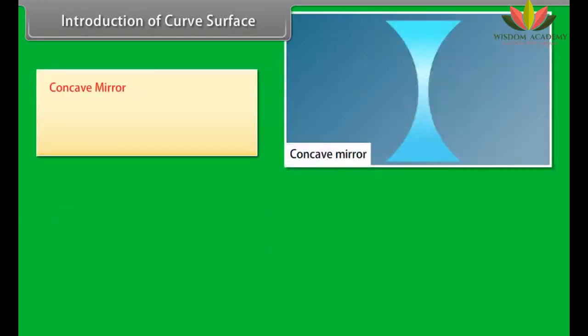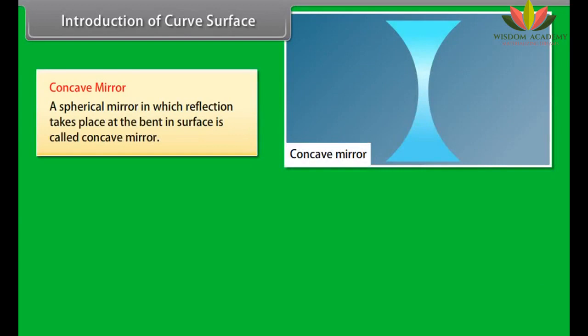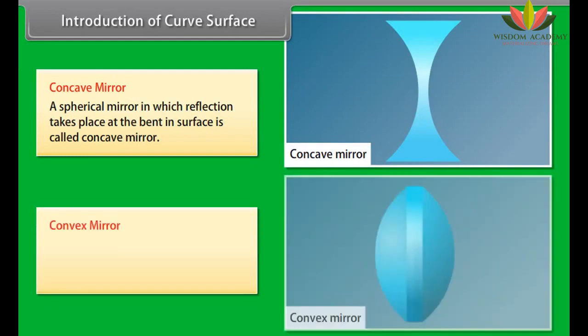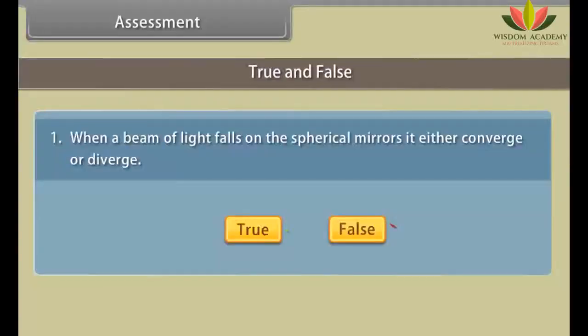A concave mirror is a spherical mirror in which reflection takes place at the bent-in surface. A convex mirror is a spherical mirror in which reflection takes place at the bulging-out surface.